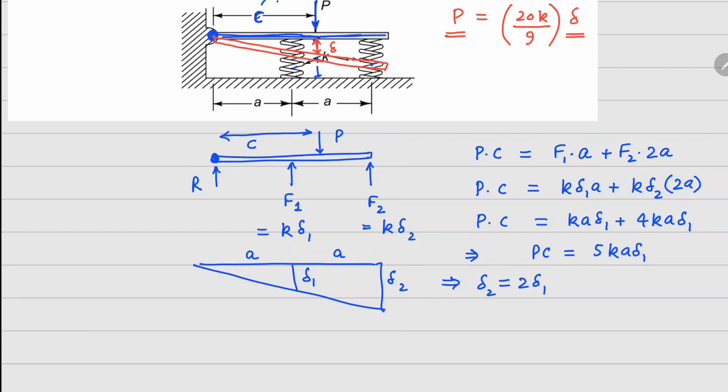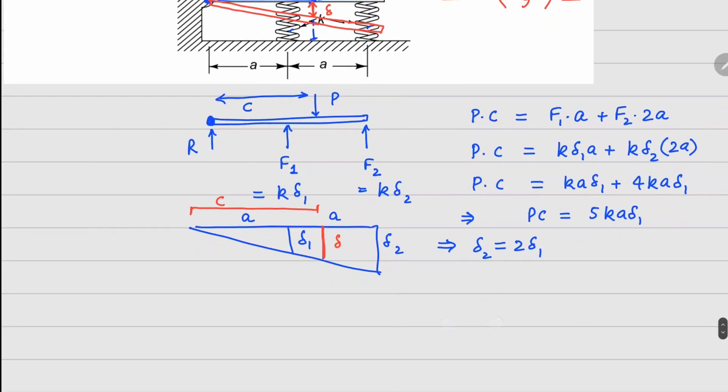Now this delta value that we're interested in finding is somewhere here, and the distance from here to here is c. Again using similar triangles here, I can write another relationship which is delta_2 divided by the whole length, 2a, equals delta divided by c from this triangle. This gives us delta_2 equals 2a delta divided by c.